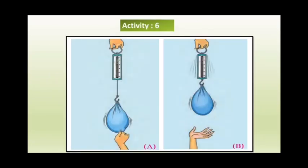Here we have an activity where you need to hang a heavy bag or pouch on the hook of a spring balance, as you can see in the picture. After that, pull the bag down and release it and observe the movement of the spring. We observe that the spring moves in the direction of the waves, that is to and fro — so these waves are called primary waves.